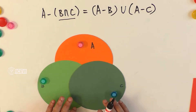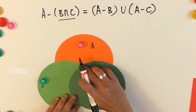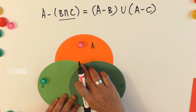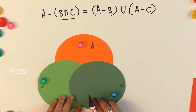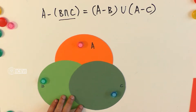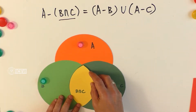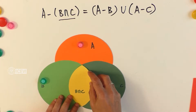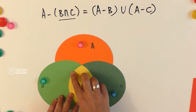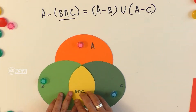Now let us find out B intersection C. There is an intersection of C and B — the common portion between B and C. We have created that common portion of B and C. Let the child explore. This is the B intersection C.